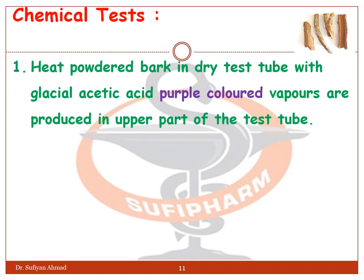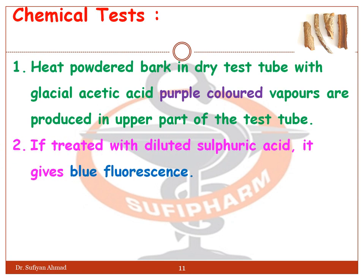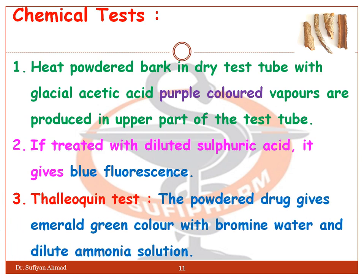Chemical tests: First, heat powdered bark in a dry test tube with glacial acetic acid — purple chlorine vapors are produced in the upper part of the test tube. Second, if treated with dilute sulfuric acid, it gives blue fluorescence. Third, the thalleioquin test: the powdered drug gives an emerald green color with bromine water and dilute ammonia solution.